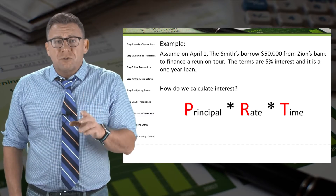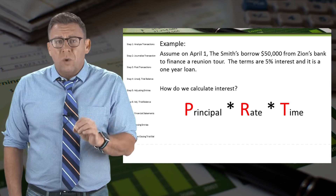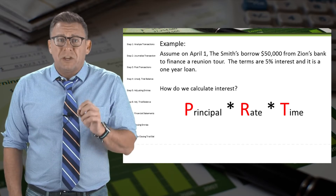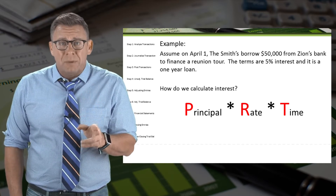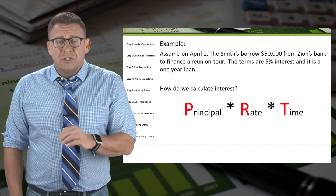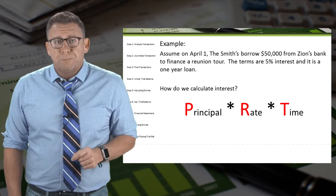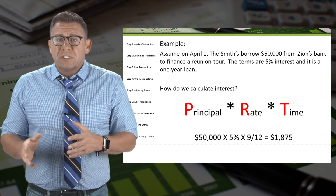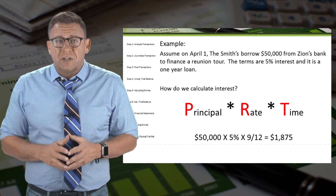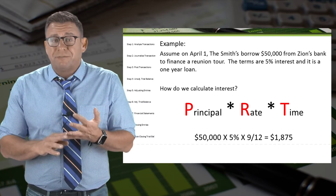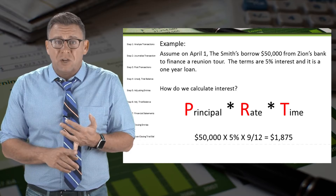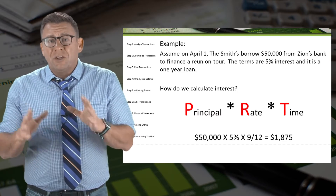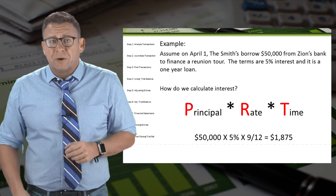Please note that the interest rate is always an annual rate, so we need to make sure that time is always in terms of one year. In this example, the principal is $50,000 times 5% annual interest times 9/12 of the year.